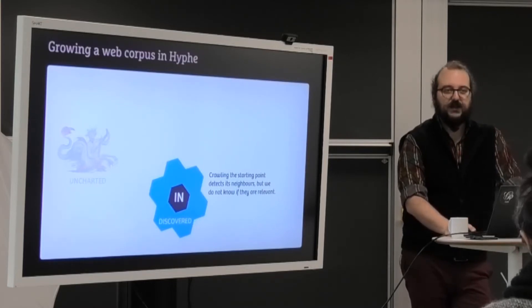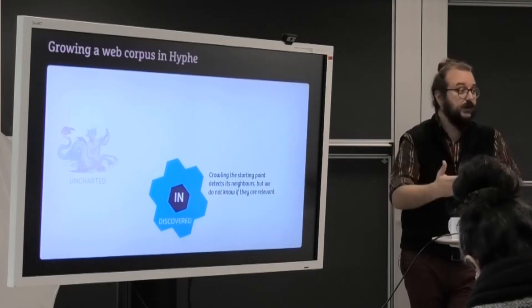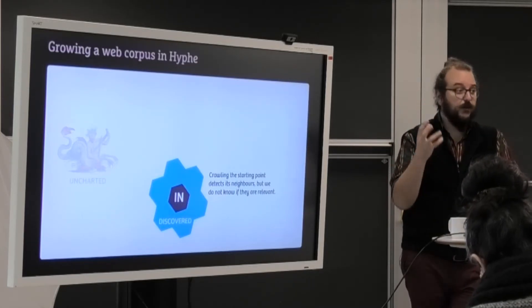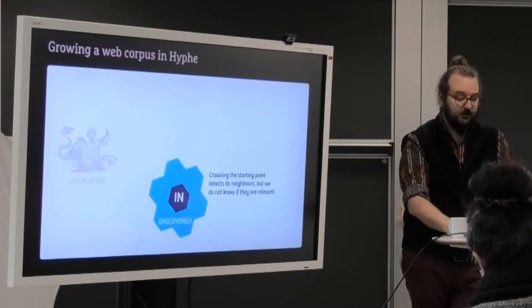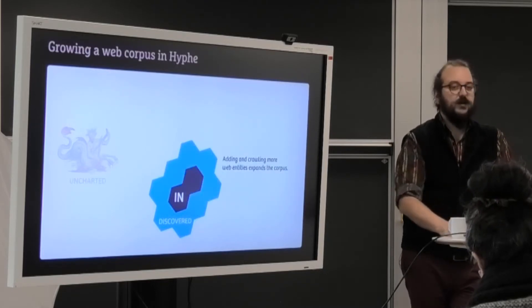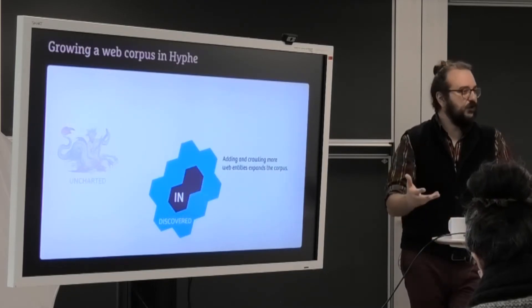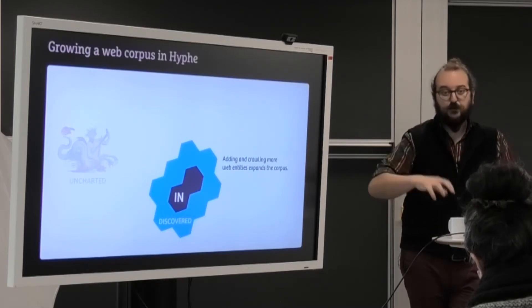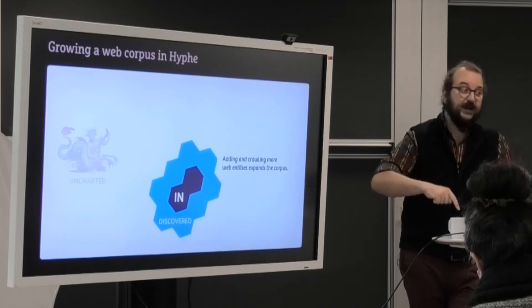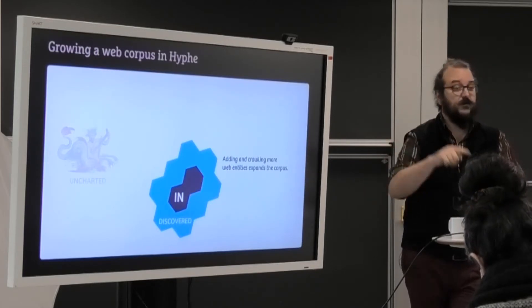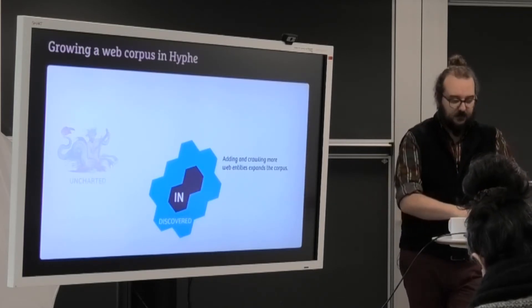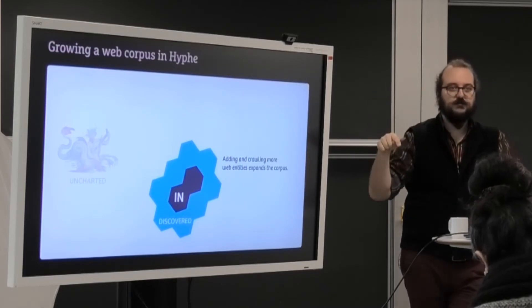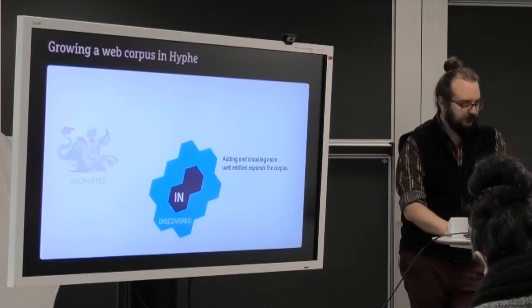So what we do now is we expand our corpus. We take a look, we pick one, and we look at whether we want it inside our corpus or not. We decide it's good, so we add it to the IN. But by doing so, we crawl it. It means we find more discovered entities. Of course, the corpus grows, but the border of discovered grows too, right?